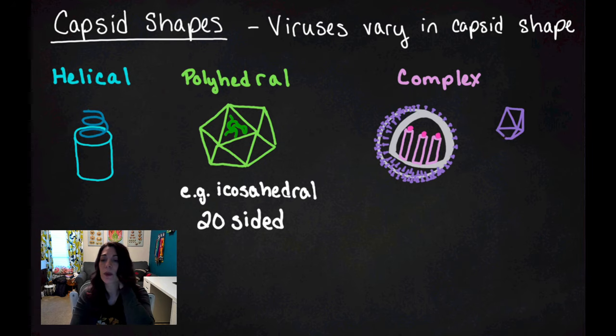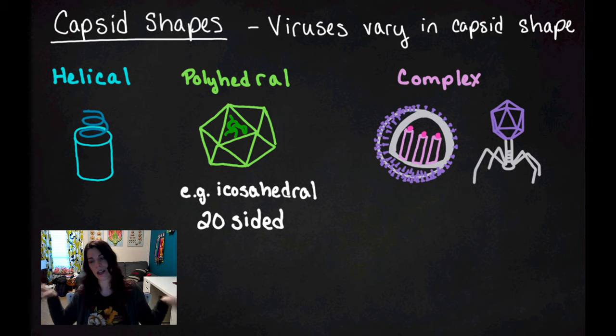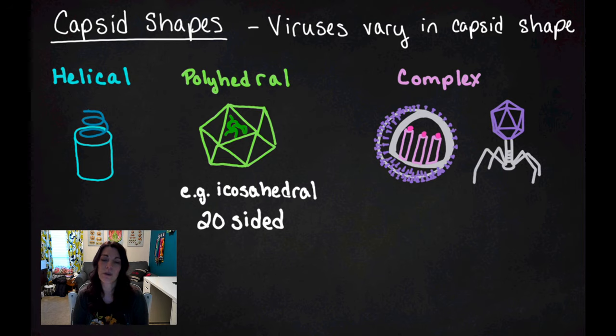And then this would also be a complex virus. This would be an example of a polyhedral virus that is attached to a helical virus and then it's got some weird crazy tail fiber leggy-like things. That is actually a drawing of a real virus, a bacteriophage, which is a virus that only affects bacteria.